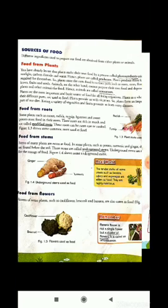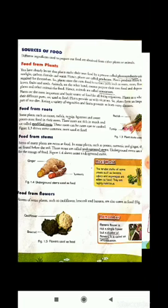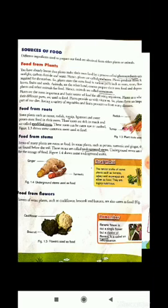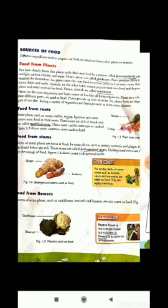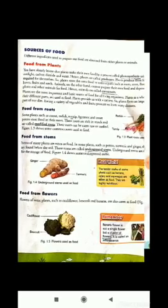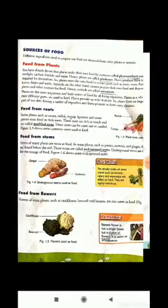Plants are the most important and basic source of food for all living organisms. Their different parts are used as food. Plants provide us vitamins, so plants form an important part of our diet. Eating a variety of vegetables and fruits protects us from many diseases. Most of our foods are obtained from plants.